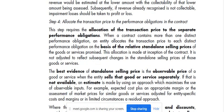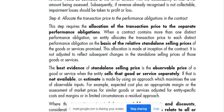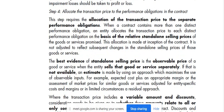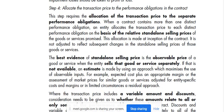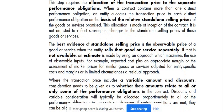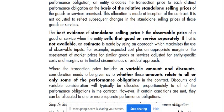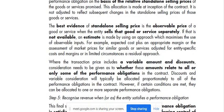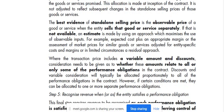If an observable price is not available, an estimate is made by using an approach which maximizes the use of observable inputs — for example, expected cost plus an appropriate margin, or the assessment of market price for similar goods or services. When the transaction price includes variable amounts and discounts, consideration needs to be given as to whether these amounts relate to all or only some of the performance obligations in the contract. Discounts and variable consideration would typically be allocated proportionally to all performance obligations; however, if certain conditions are met, they can be allocated to one or more separate performance obligations.